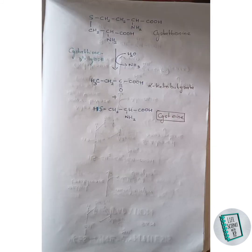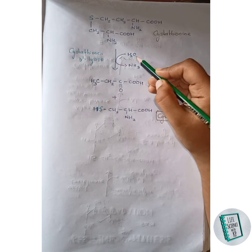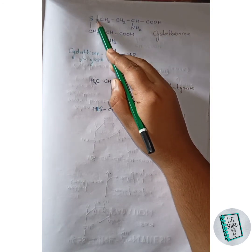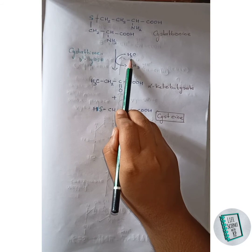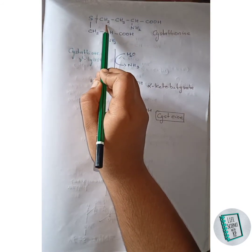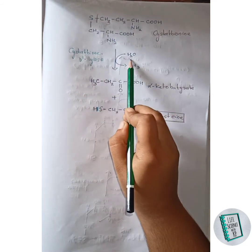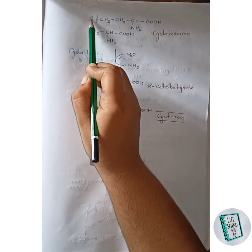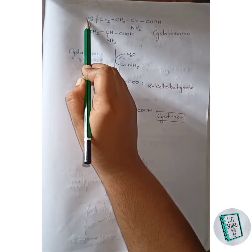The cystathionine thus formed then in the presence of cystathionine gamma lyase forms alpha-ketobutyrate and cysteine. A water molecule comes and breaks this bond. One hydrogen of the water molecule attaches with this CH2 and forms CH3, and the next hydrogen attaches with the sulfur.